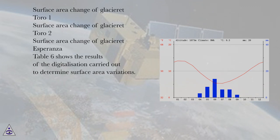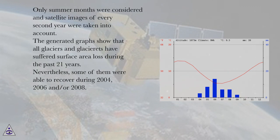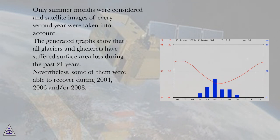Table 6 shows the results of the digitalization carried out to determine surface area variations. Only summer months were considered and satellite images of every second year were taken into account. The generated graphs show that all glaciers and glacier rays have suffered surface area loss during the past 21 years.